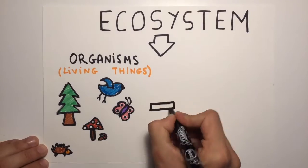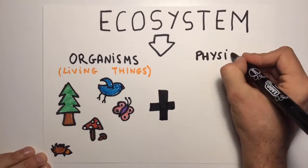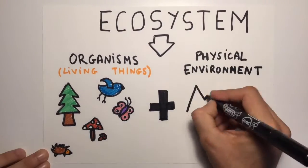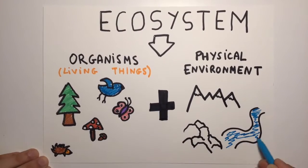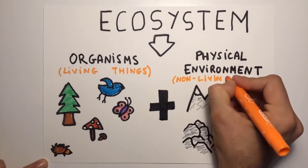An ecosystem consists of all the organisms living in one place, as well as the physical environment they live in. Organisms in an ecosystem interrelate with each other.